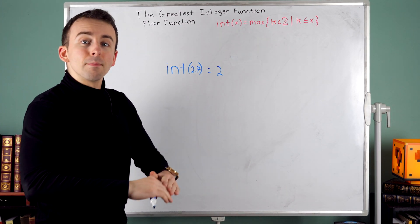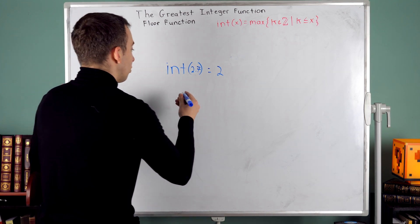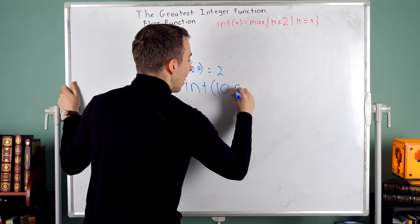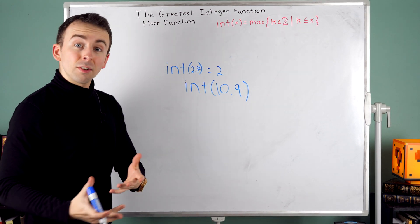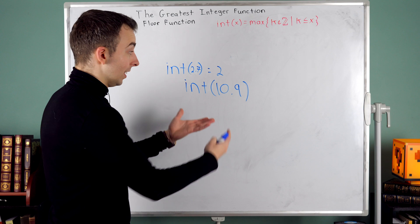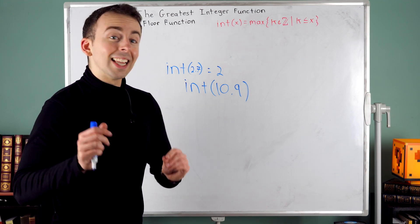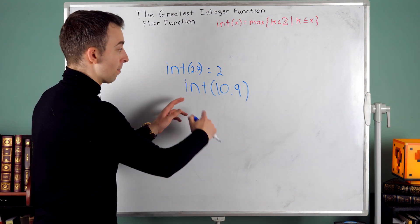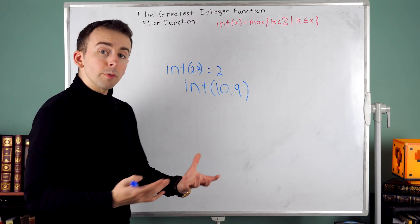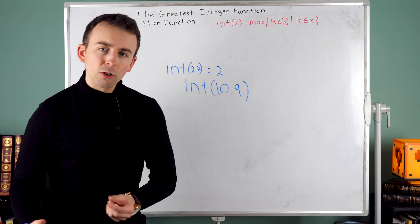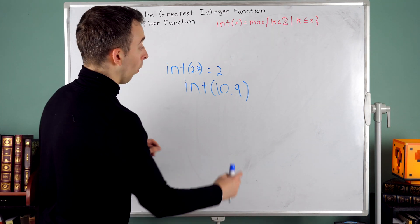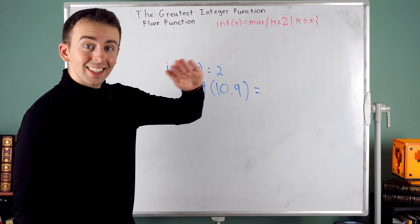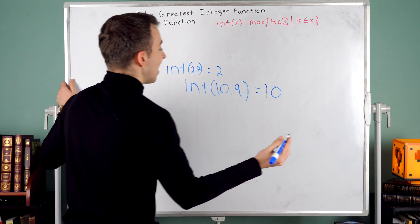It's like it drops the input to the nearest floor. So as another example, what about int of 10.9? 10.9 is pretty close to 11. 11 is the closest integer, but 11 is greater than 10.9. And remember the greatest integer or floor function outputs the greatest integer that's less than or equal to the input. So again, simply put, it just rounds down. It's going to output 10.